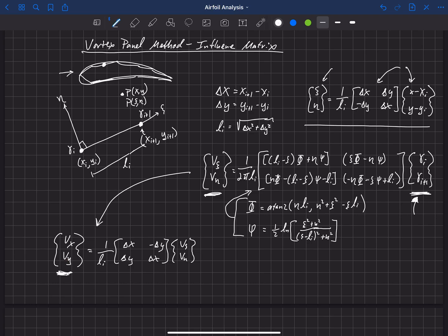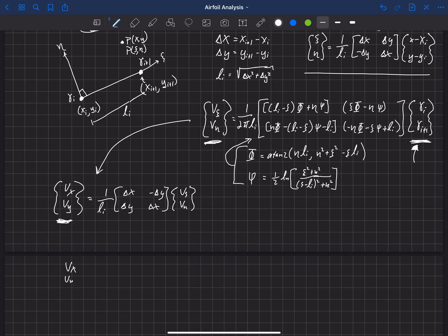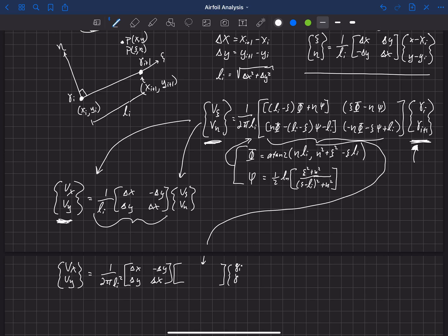So we can kind of simplify this and say that Vx, Vy is equal to 1 over 2 pi Li squared, if I multiply. So if I take this and then take this guy and put him straight in there, then what I get is the multiplication of two matrices. We get delta x minus delta y, delta y and delta x for that first matrix, and then we're going to multiply, we're going to take this matrix here, and put it in right here for this matrix, I won't rewrite that, but and then what comes, and then on the end here, we have gamma sub i and gamma i plus one.